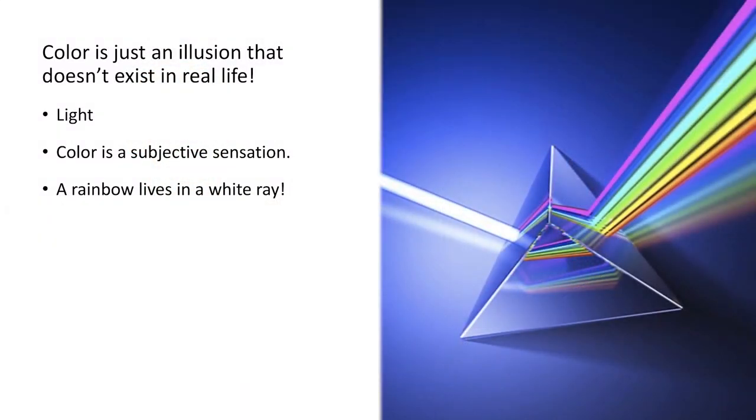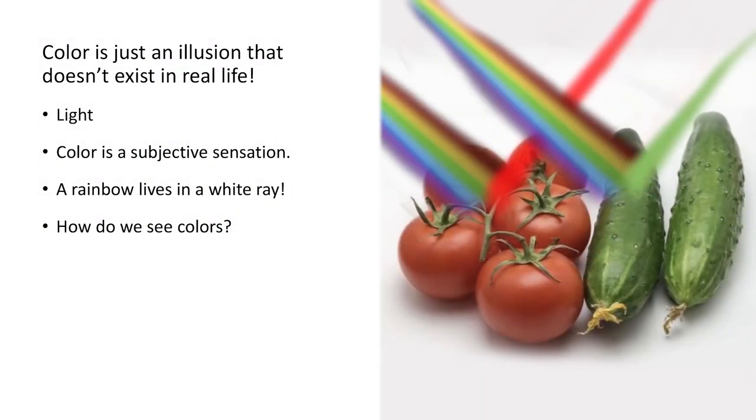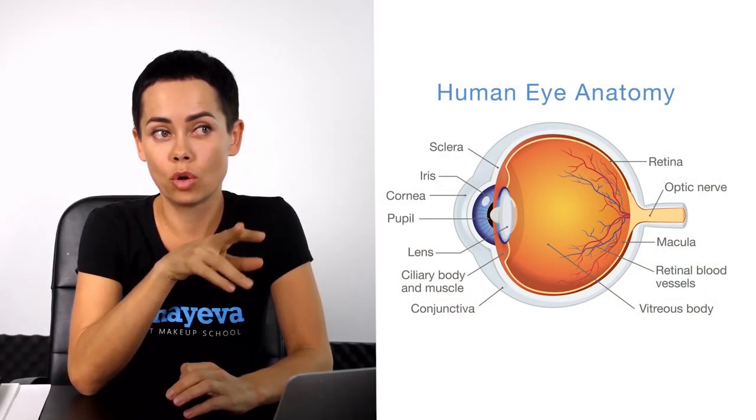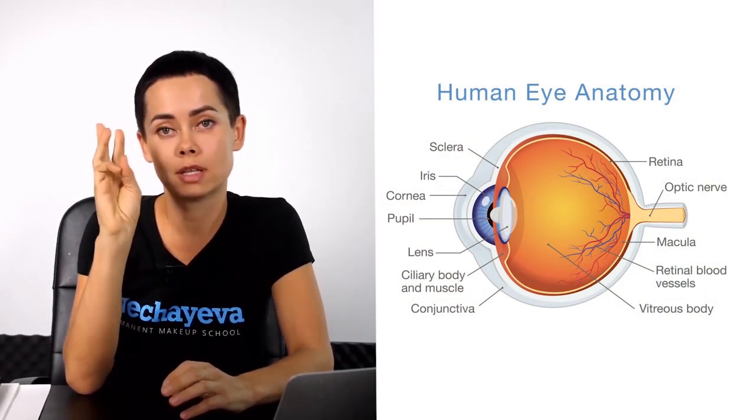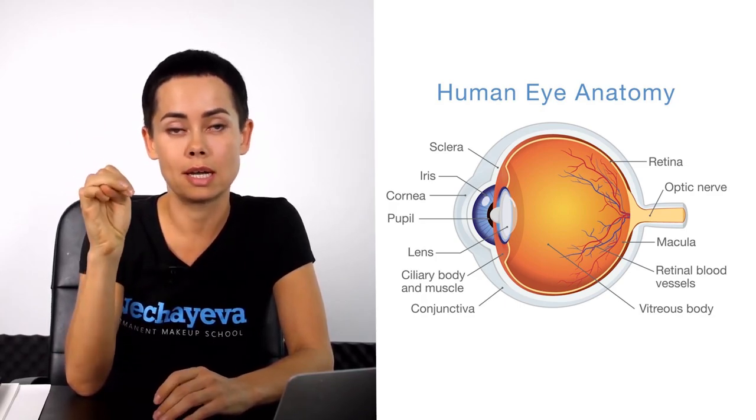What is light? Light — we see color, not light. The eye can see three colors: blue, green, and red.